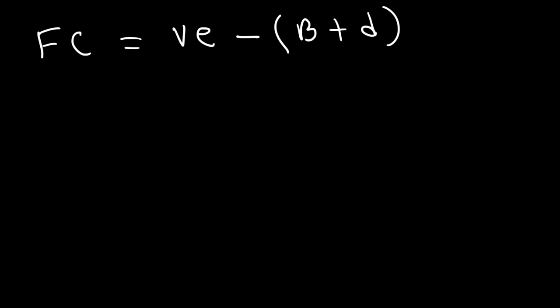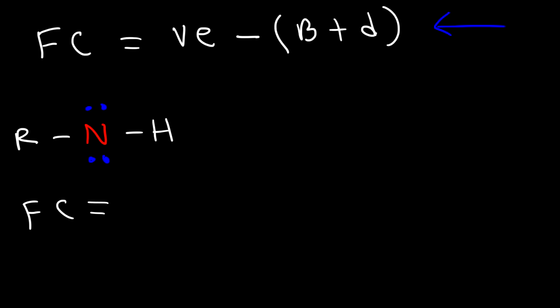Let me give you an example. We're going to focus on calculating the formal charge of the nitrogen atom. In this example, nitrogen is going to have two lone pairs. So using this formula, feel free to pause the video if you want and calculate the formal charge on the nitrogen atom. First, we need to determine how many valence electrons an atom of nitrogen contains. An atom of nitrogen naturally contains five valence electrons.